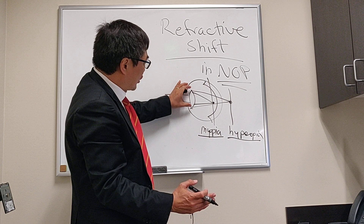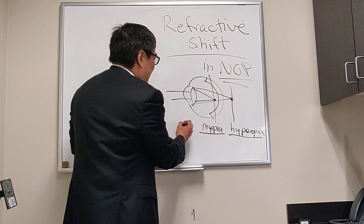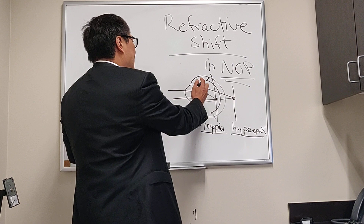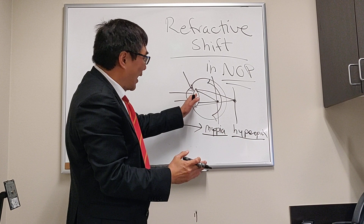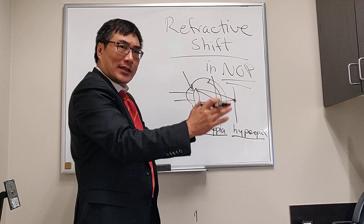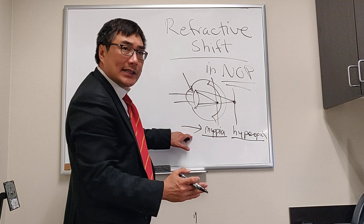Starting with changes in the lens: the most common cause of a transient myopic shift in neuro-ophthalmology is diabetes. Hyperglycemia drives sugar into the lens, and through the polyol pathway and sorbitol, the sugar gets trapped inside the lens, the lens swells, and that leads to a myopic shift. We never want to give glasses to someone whose blood sugar is not under control.